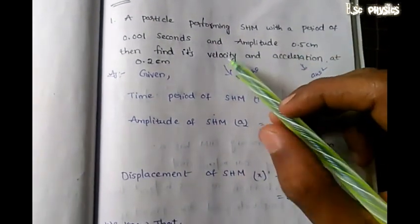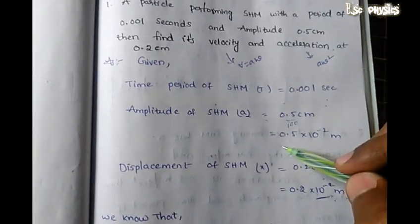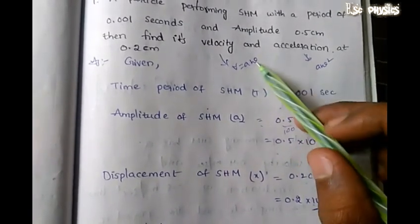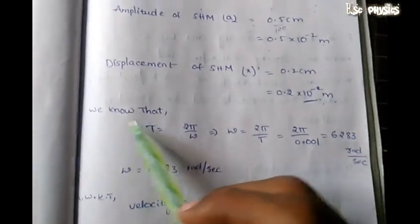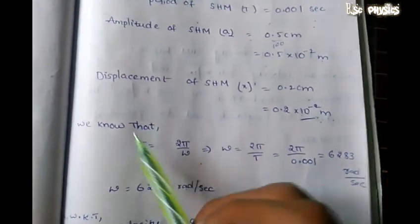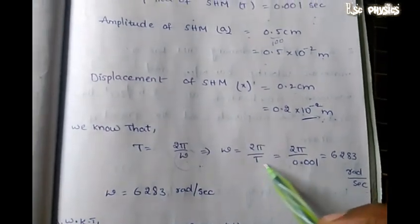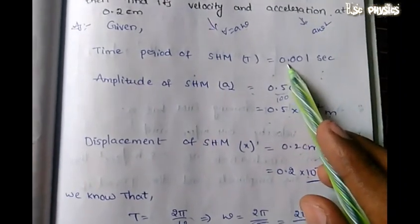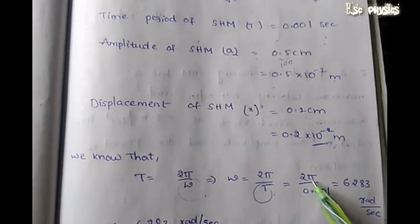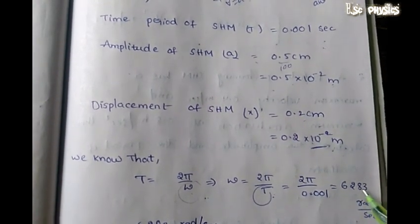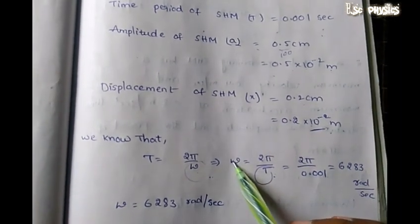So velocity v equals A omega. We have amplitude 0.5 into 10 to the power of minus 2 meters, but we don't have angular velocity. The time period T equals 2 pi by omega, so omega equals 2 pi by T. The time period is 0.001 seconds, so omega equals 2 pi divided by 0.001, which gives 6283 radians per second.